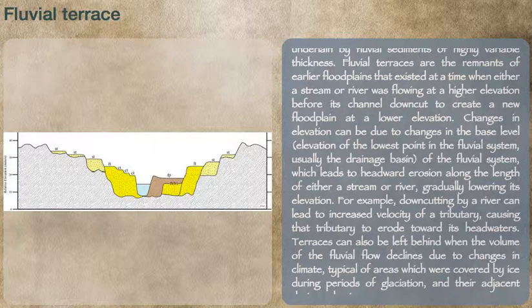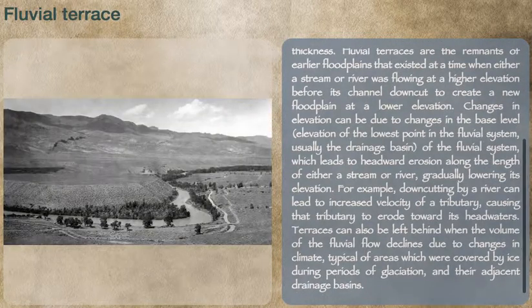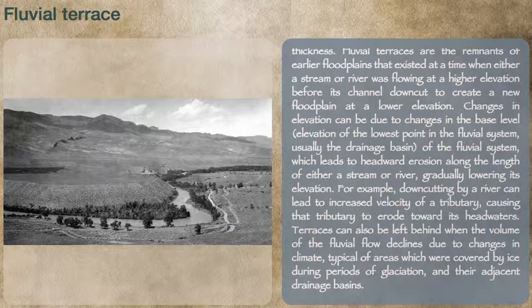Changes in elevation can be due to changes in the base level — the elevation of the lowest point of the fluvial system, usually the drainage basin — which leads to headward erosion along the length of either a stream or river, gradually lowering its elevation. For example, downcutting by a river can lead to increased velocity of a tributary, causing the tributary to erode toward its headwaters.